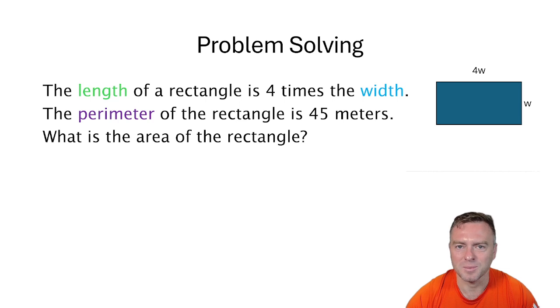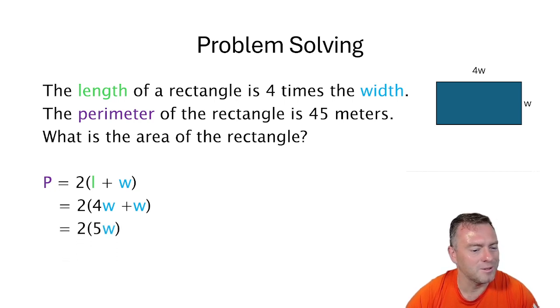So we've got 4W times the W. So the perimeter is the same as 2 lots of the L plus W. So it's the same as 2 lots of 4W plus W. If we swap the L for 4W. Then we group that together we get 5W's.